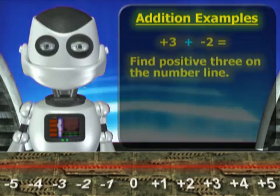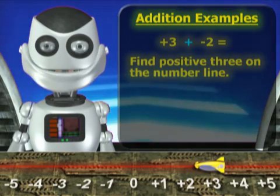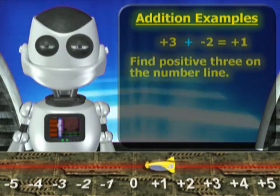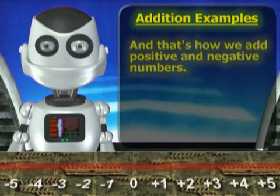Find positive three on the number line. We move from positive three to the left, counting two positions. And our answer is one. And that's how we add positive and negative numbers.